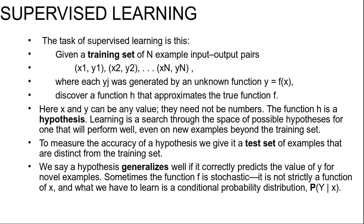We say a hypothesis generalizes well if it correctly predicts the value of y for novel examples. Sometimes the function f is stochastic—it is not strictly a function of x. What we have to learn is a conditional probability distribution P(Y | x).